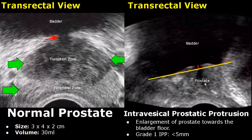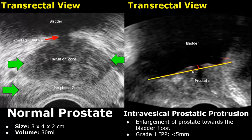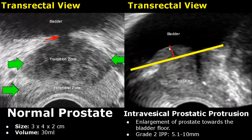Benign prostatic hyperplasia can lead to intravesical prostatic protrusion — the enlargement of the prostate towards the bladder floor. This imaginary line is the boundary between the bladder and the prostate, and here is the protruding prostate. Grade 1 protrusion will measure 5 mm or less. Here we have grade 2 intravesical prostatic protrusion, measuring between 5.1 to 10 mm.